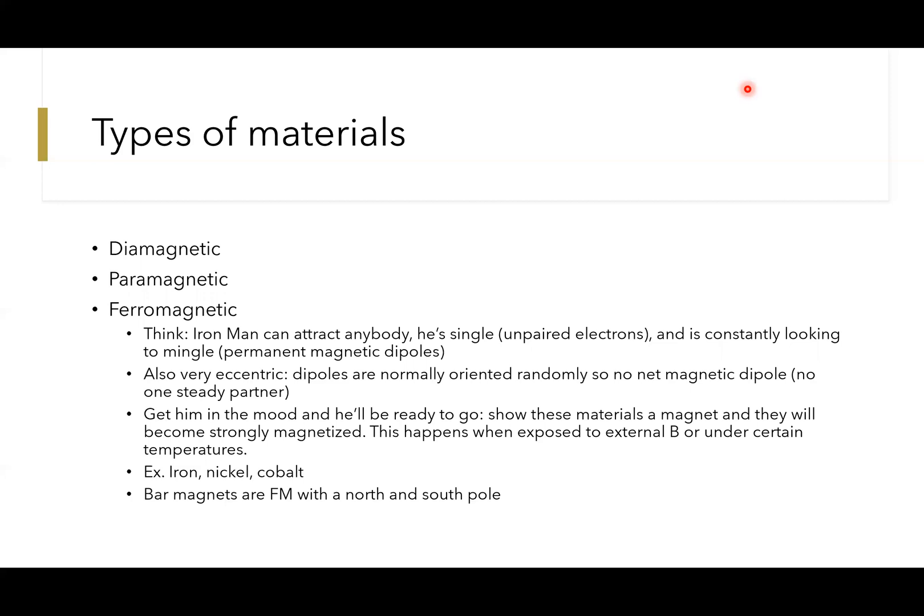Examples of this are, duh, iron, and other things like nickel and cobalt, any kind of bar magnet. Those are things that we played with as a kid in physics lab. Those are ferromagnetic materials with the North and South Pole.